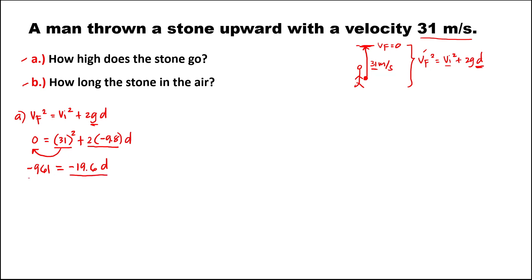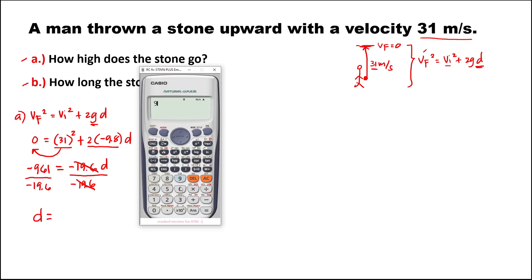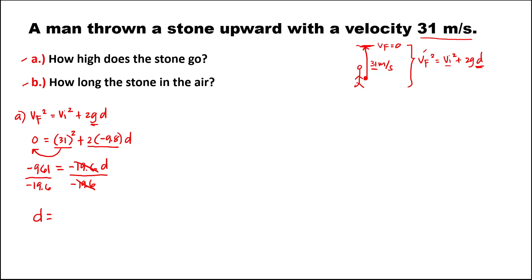To find the displacement of the stone, divide both sides by negative 19.6. The displacement equals 961 divided by 19.6, which is 49.03. So the displacement of the stone is equal to 49.03 meters.